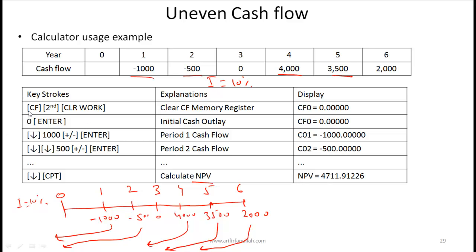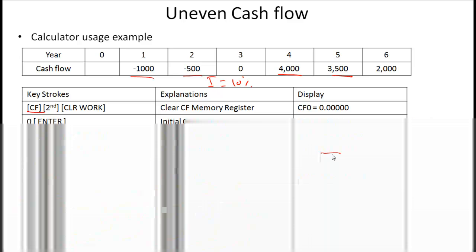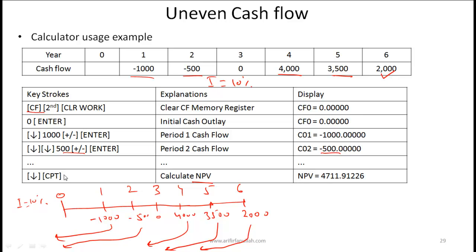The calculator keystrokes: first click the cash flow button, then second clear work to clear all memory. Hit 0 enter for the initial cash flow at time 0, then hit the down arrow. Enter 1000 plus/minus for the negative cash flow at period 1. Hit the down arrow twice, then enter 500 plus/minus for period 2. Continue entering each cash flow until you have entered 2000 for cash flow number 6. Hit the down arrow, compute, specify interest rate 10%, and calculate NPV. Practice this a few times and you will find it quite simple.